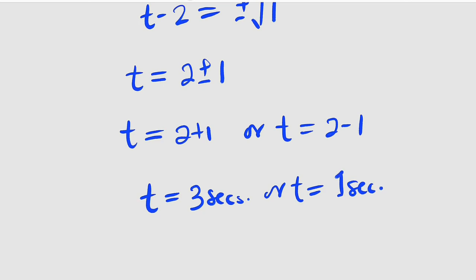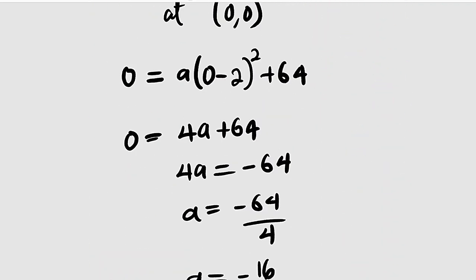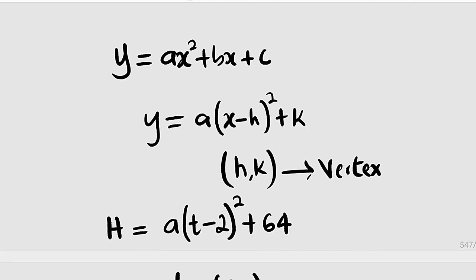So at either 3 seconds or 1 second, the ball is going to reach 48 feet. So let's assume this is 1 and this is 3. If you go up like this, you're going to reach 48 feet. And this is the solution to the problem.